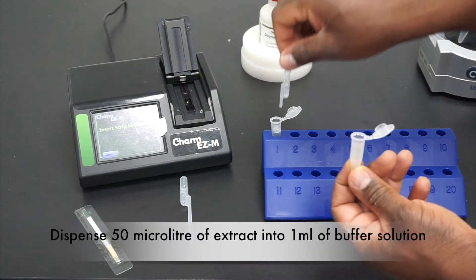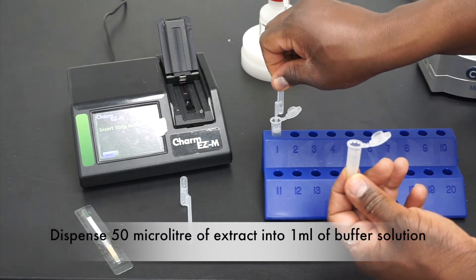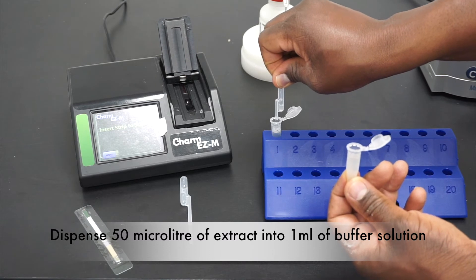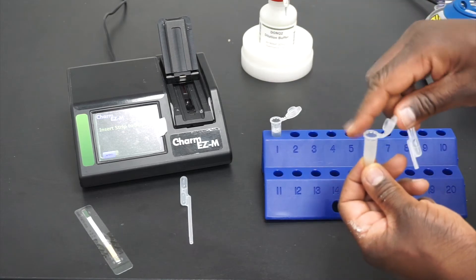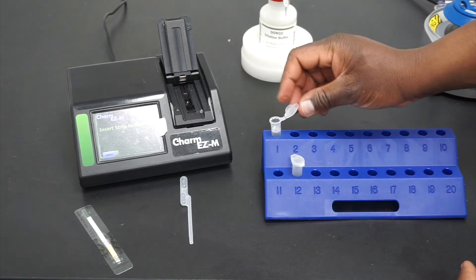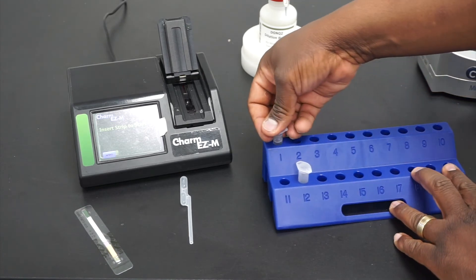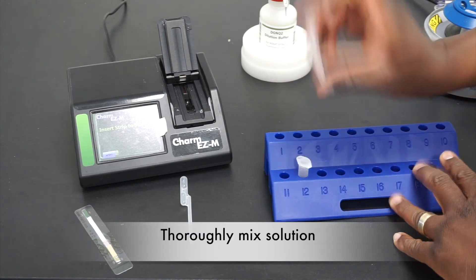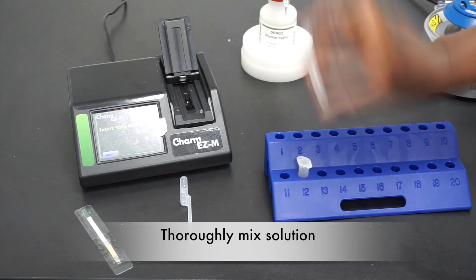Dispense 50 microliters of extract into one milliliter of buffer solution. Thoroughly mix your sample with a vigorous shake.